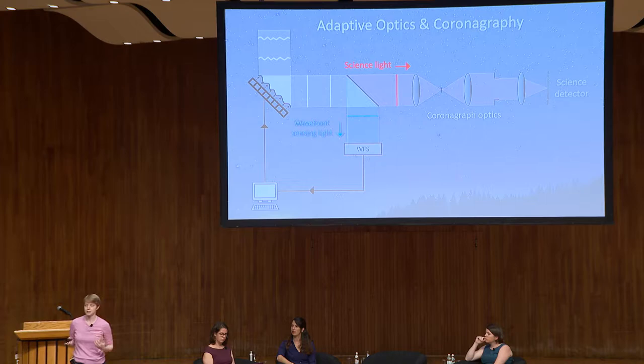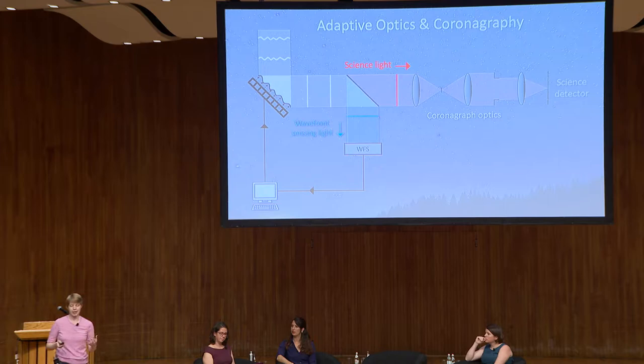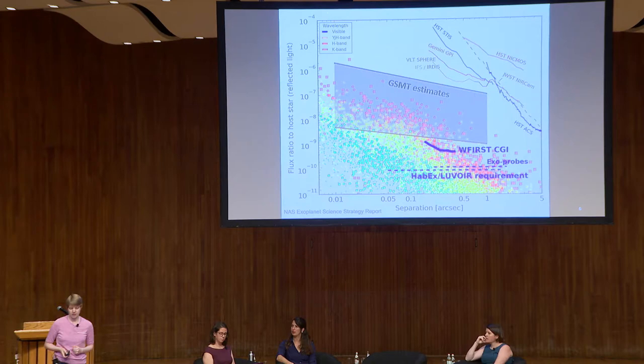We know how to change the shape of our deformable mirror using a wavefront sensor. After the AO system, we put in our coronagraph optics to suppress the airy rings and form our image of the star. Most of the starlight has now been suppressed so we can image a planet near the star.